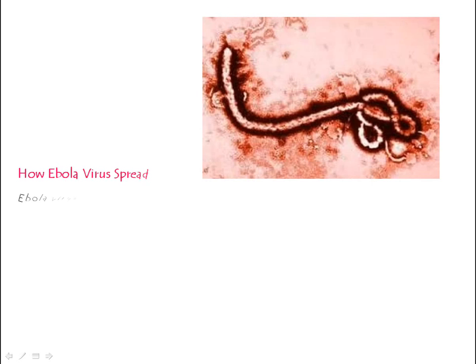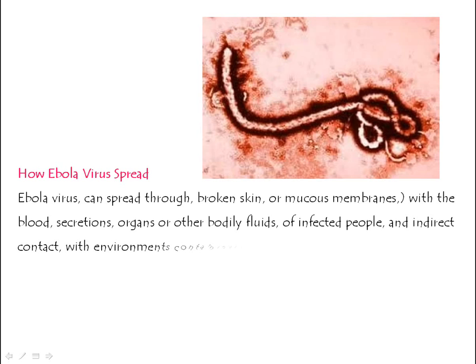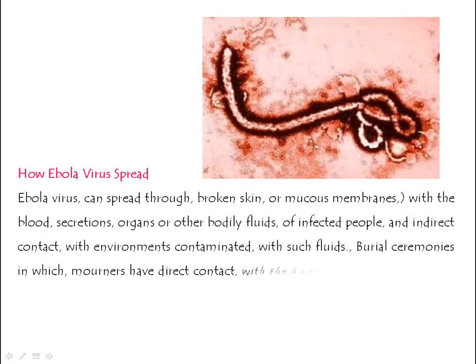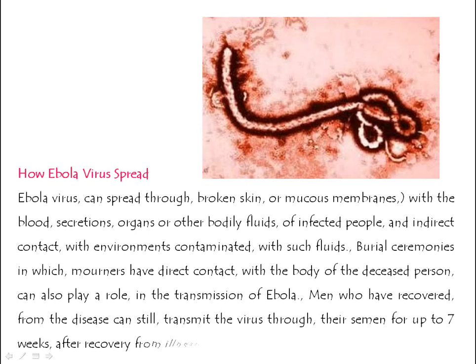How Ebola virus spreads. Ebola virus can spread through broken skin or mucous membranes with the blood, secretions, organs or other bodily fluids of infected people, and in direct contact with environments contaminated with such fluids. Burial ceremonies in which mourners have direct contact with the body of the deceased person can also play a role in the transmission of Ebola.